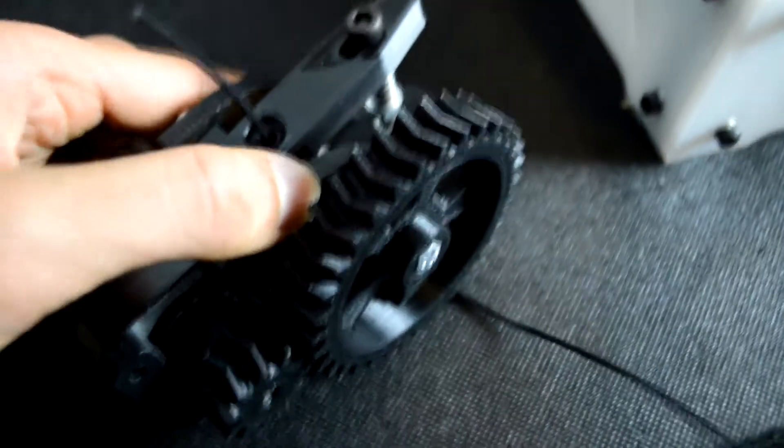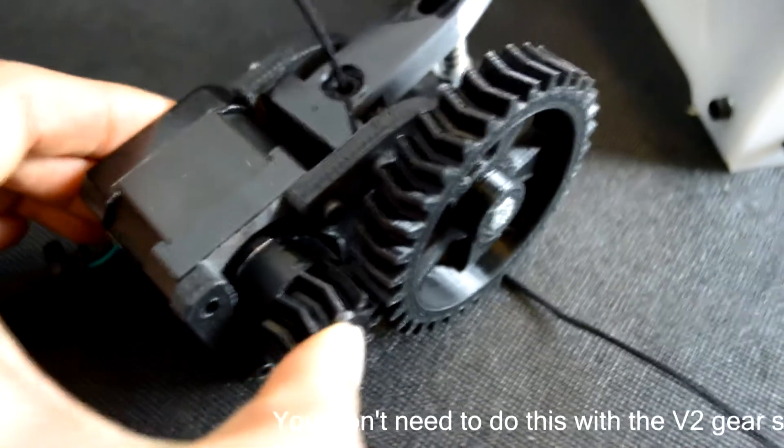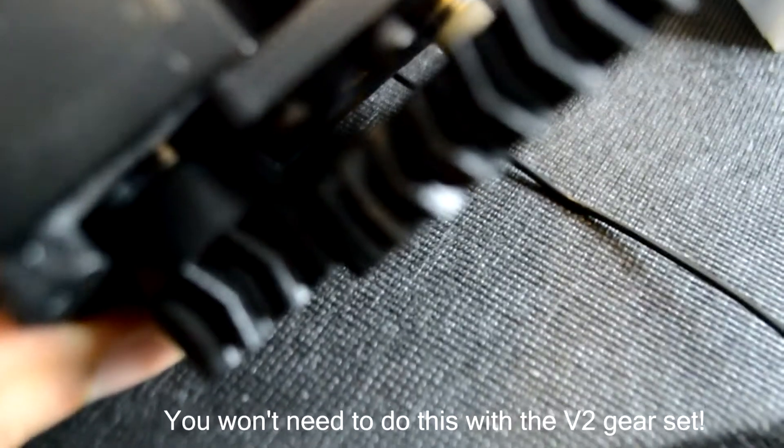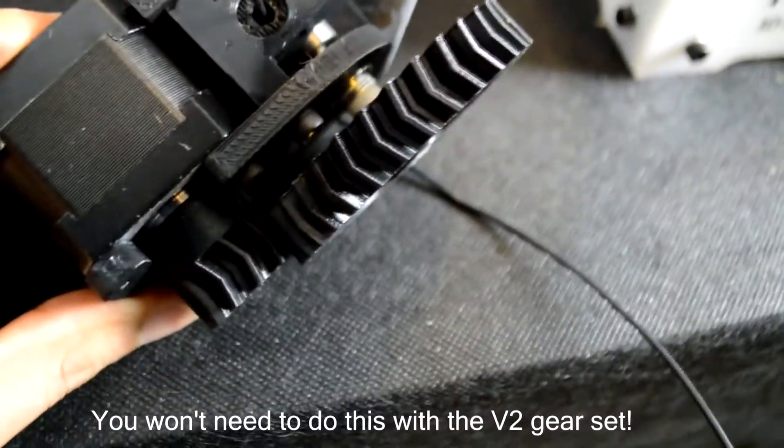And what that's gonna do is push the large gear out. And then you need to push the small gear right up against the motor. And then it should lock like so with a slight gap there.